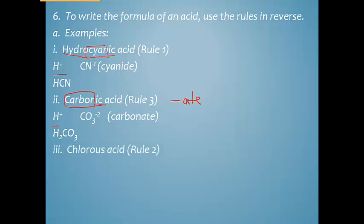And lastly we have chlorous acid. And -ous is rule number two. So this originally had to end in -ite. So we have chlor, chlorite was the original anion. Chlorite is ClO2 with a minus one. And again here's a plus one with a minus one. They're already balanced. So HClO2 would be the final formula.